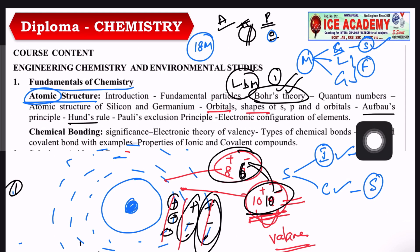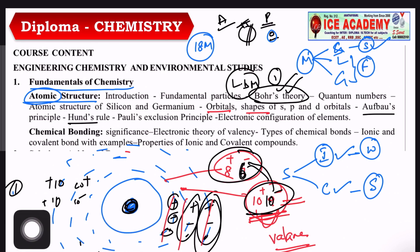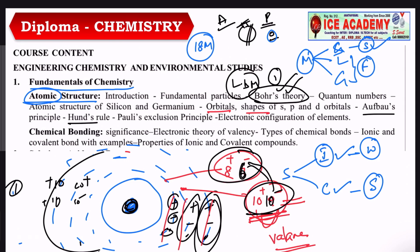The next step is the Aufbau principle. What is the Aufbau principle? This is a nucleus — for example, we have 10 protons and 10 electrons here. If we compare the orbits, we can see how much energy is in each orbit. The energy is highest at the innermost orbital — energy goes on increasing when moving toward the innermost orbital.